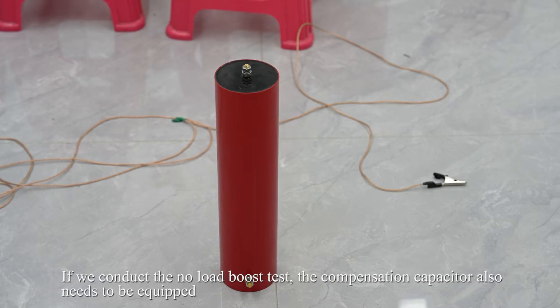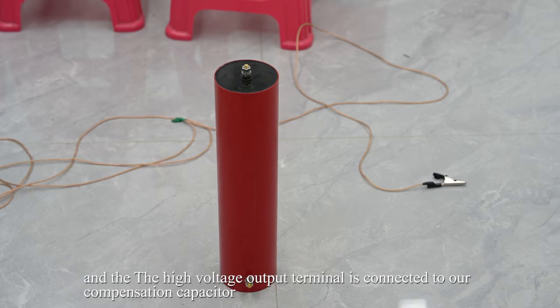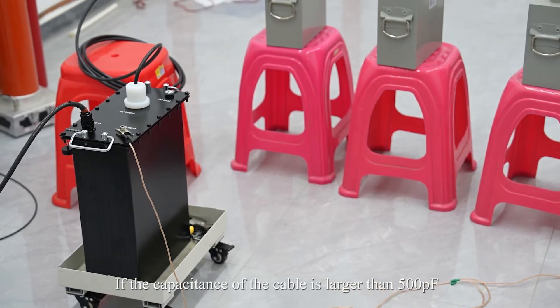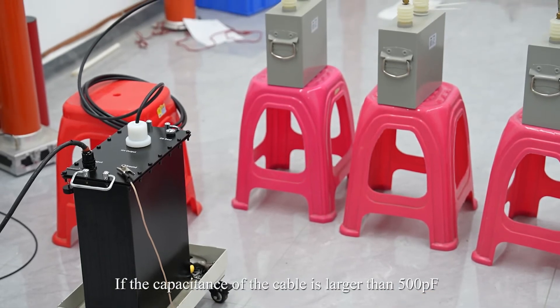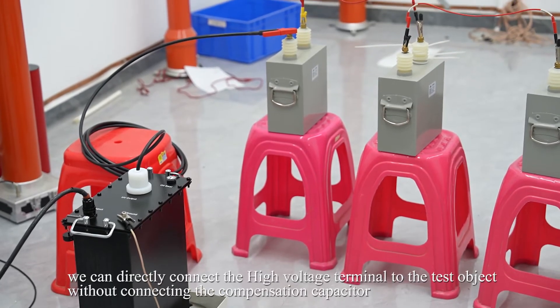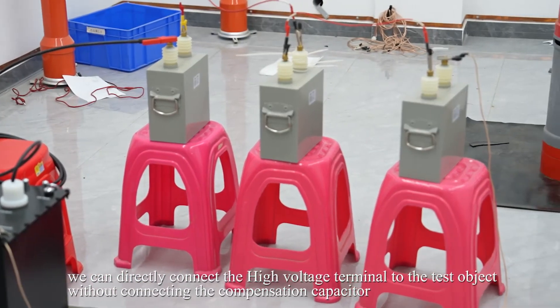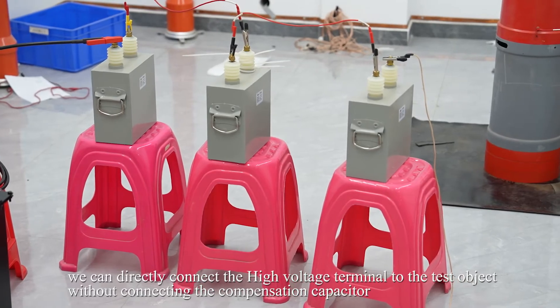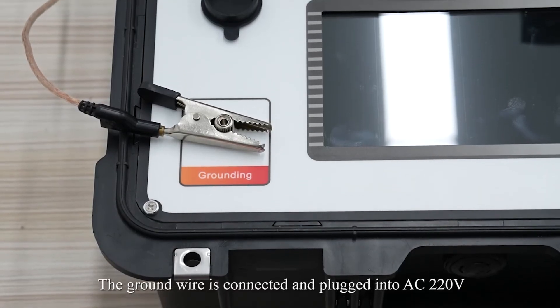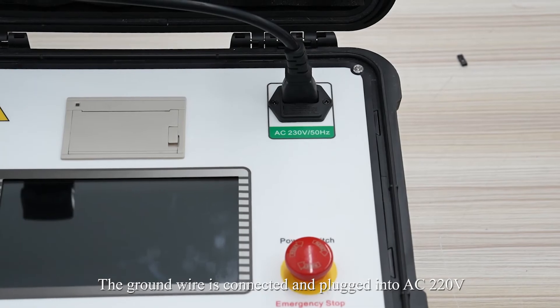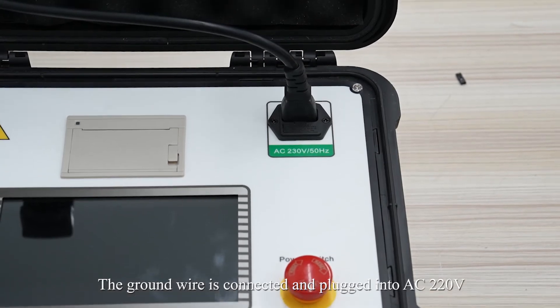If we conduct the low-load boost test, the compensation capacitor also needs to be equipped, and the high-voltage output terminal is connected to our compensation capacitor. If the capacitance of the cable is larger than 500 pF, we shall directly connect the high-voltage terminal to the test object without connecting the compensation capacitor. The ground wire is connected and plugged into AC 220V power.